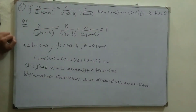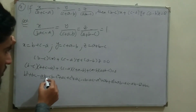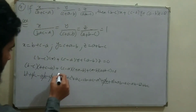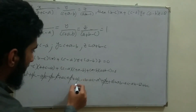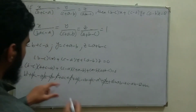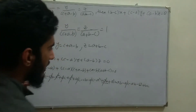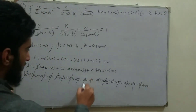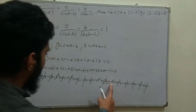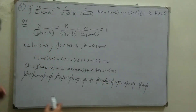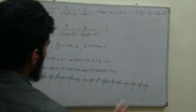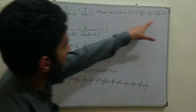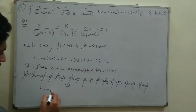Cancelling terms: −ab+ab cancels, −cb+bc cancels, −c²+c² cancels, ac−ac cancels, ac−ac cancels again, ab−ab cancels, b²−b² cancels, −bc+bc cancels, and a²−a² cancels. All terms cancel and we are left with zero. Hence (b−c)x+(c−a)y+(a−b)z = 0 is proved.